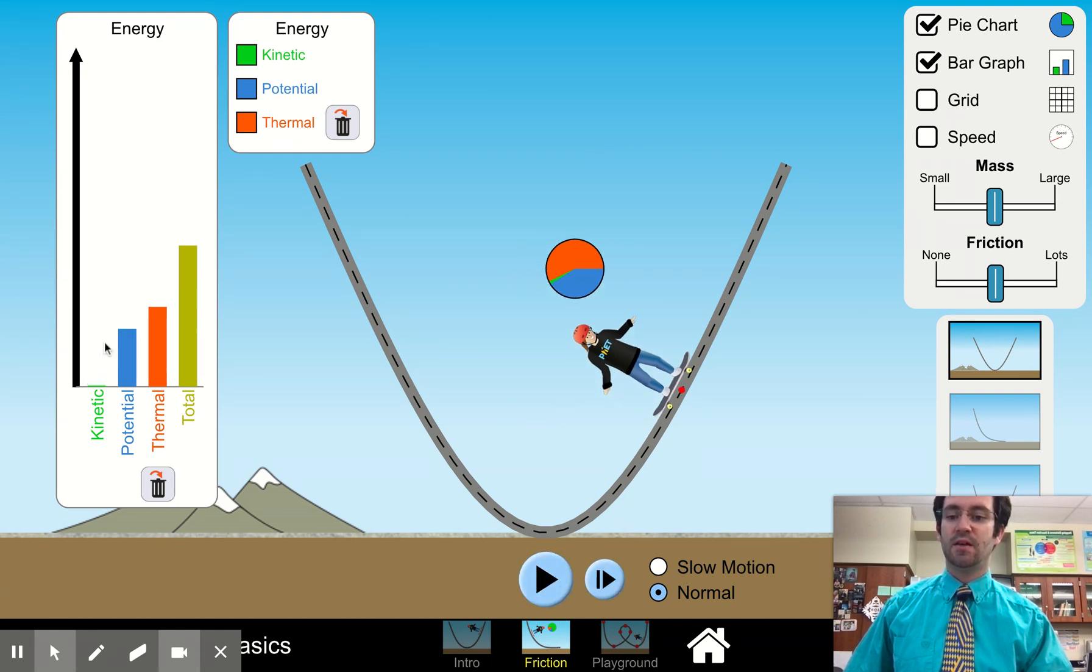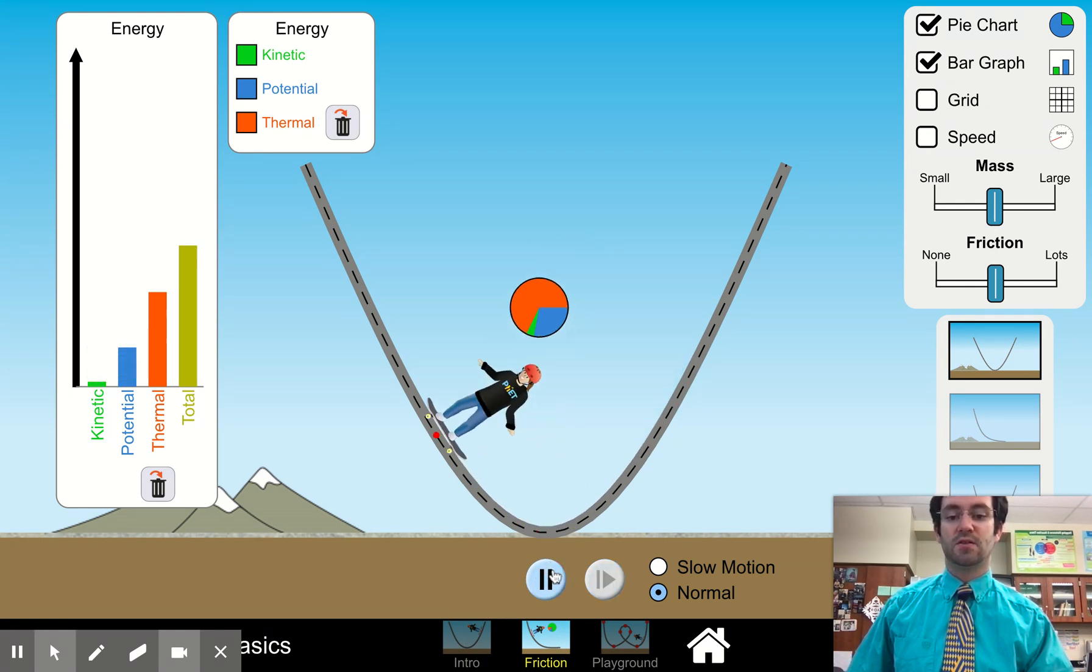So right now she has very little kinetic. She has a little bit of potential, quite a bit of thermal, and the total energy is staying constant, right? Because our maximum energy, you cannot create or destroy energy.